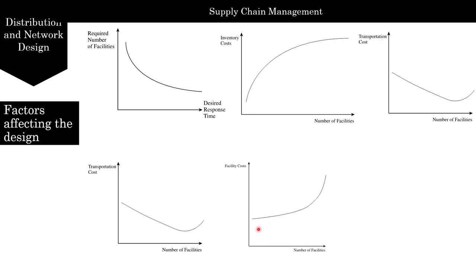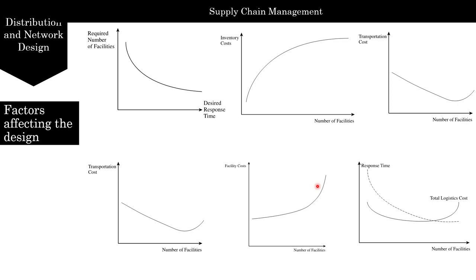Facility costs decrease as the number of facilities is reduced, initially with a large drop due to consolidation, which reduces fixed costs by reducing property, plant, and equipment. Amazon achieved a property, plant, and equipment turnover of 19, whereas Barnes and Noble has only 7. The total logistics cost is the sum of inventory, transportation, and facility costs for a supply chain network.